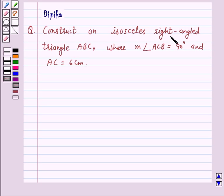Construct an isosceles right-angled triangle ABC where measure of angle ACB is 90 degrees and AC is equal to 6 cm.